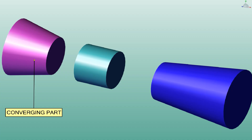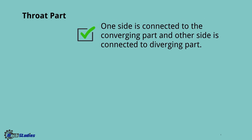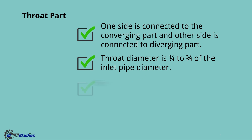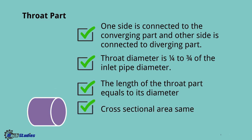Let's talk about the basic characteristics of the throat. One side is connected to the converging part and the other side is connected to the diverging part. Throat diameter is one-fourth to three-fourth of the inlet pipe diameter. The length of the throat part equals its own diameter. The cross-sectional area is the same throughout the throat.